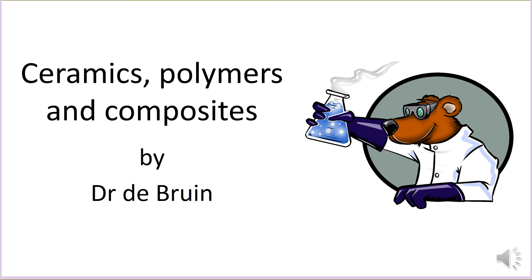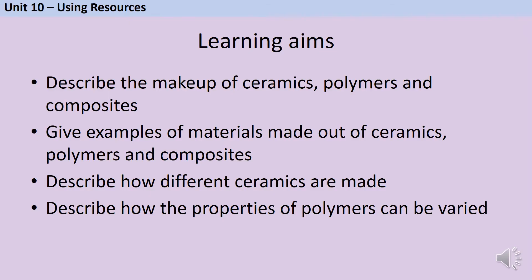This is a revision video about the GCSE chemistry topic of novel materials: ceramics, polymers and composites. This comes up in paper 2 of AQA GCSE chemistry and it's part of unit 10, the using resources unit. In this video we're going to describe the makeup of ceramics, polymers and composites, give some examples of materials made out of them, describe how different ceramics are made, and describe how the properties of polymers can be varied.